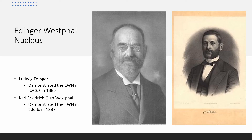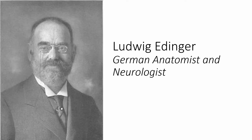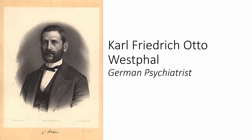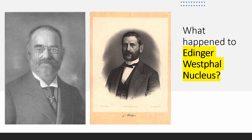This accessory oculomotor nucleus is named after Ludwig Edinger and Carl Westphal, who demonstrated the presence of these neurons in the midbrain. Both of them were Germans. Edinger was an anatomist and neurologist, while Westphal was a psychiatrist. So what has now happened to the Edinger-Westphal nucleus?